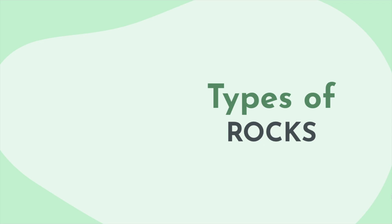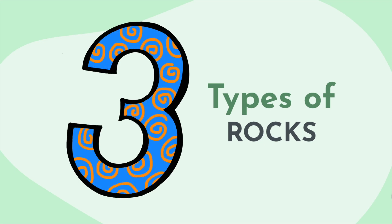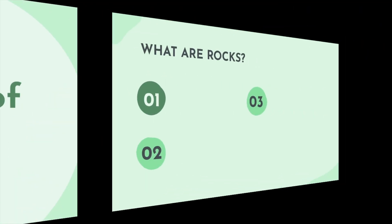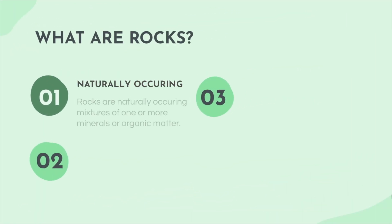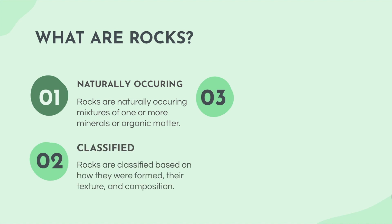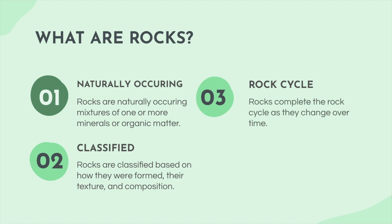Types of rocks — there are three of them and we're going to talk about them today. But first off, what are rocks? Rocks are naturally occurring mixtures of one or more minerals or organic matter. Rocks are classified based on how they were formed, their texture, and their composition. Rocks complete the rock cycle as they change over time.